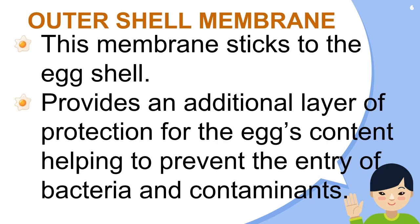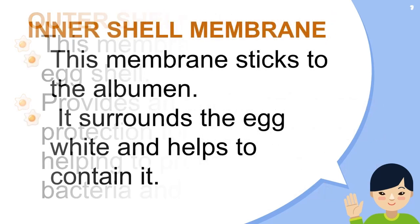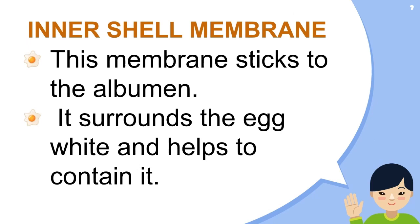The outer shell membrane of an egg is a pair of membranes that lie just beneath the eggshell. There are two main membranes: the inner shell membrane and the outer shell membrane. The inner membrane is in direct contact with the egg white or albumin, adhering to the eggshell surface and providing an additional layer of protection. It is semi-permeable, allowing gas exchange between the inside of the egg and the external environment. The outer shell membrane, located just beneath the inner membrane, acts as a secondary barrier and also works in conjunction with the inner membrane to protect against contamination by microorganisms.